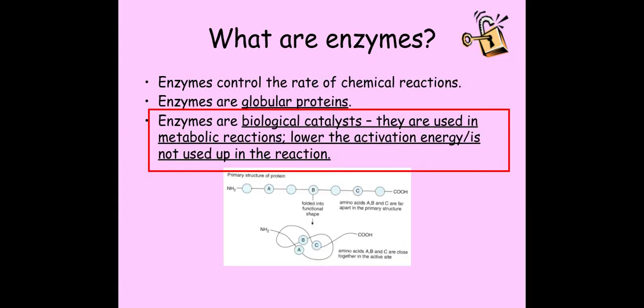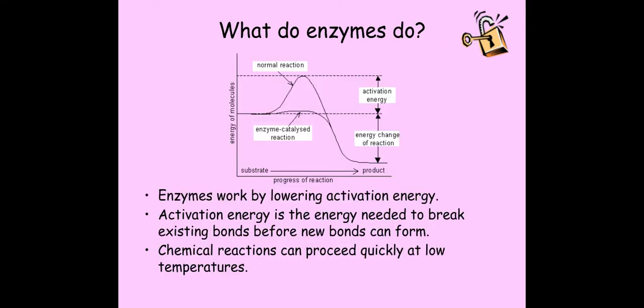Enzymes control the rate of chemical reactions and they are globular proteins. Enzymes are also known as biological catalysts. We need to know that definition directly from the mark scheme: they work in metabolic reactions by lowering the activation energy, and they are not used up in the reaction.